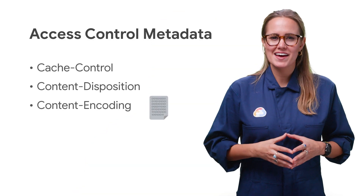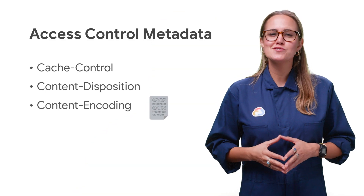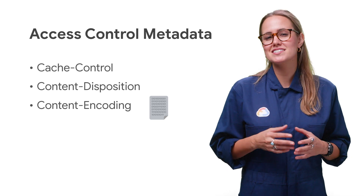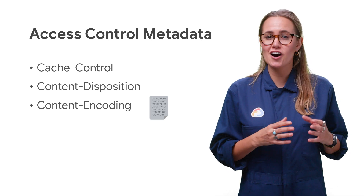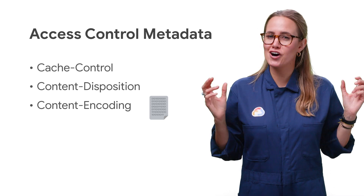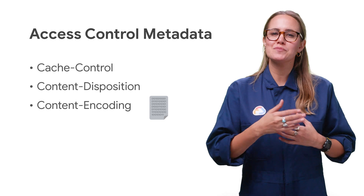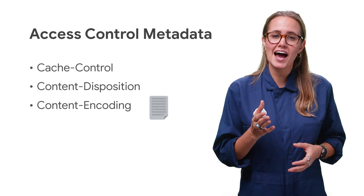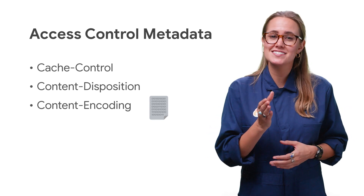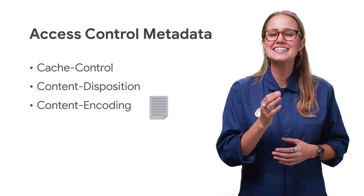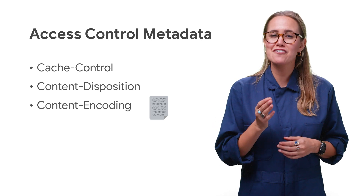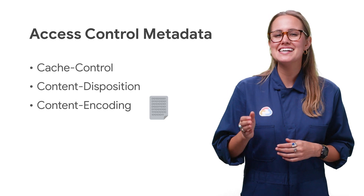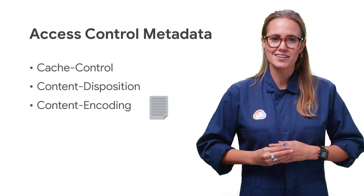The content encoding metadata can be used to indicate that an object is compressed while still maintaining the object's underlying content type. For example, a text file that is gzip compressed can have the fact that it's a text file indicated in the content type, and the fact that it's gzip compressed indicated in content encoding.